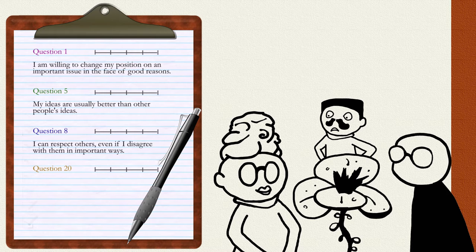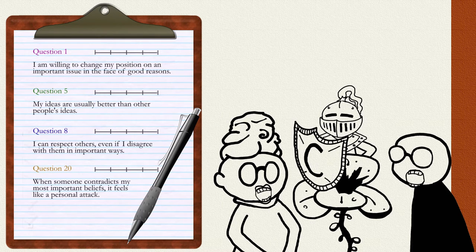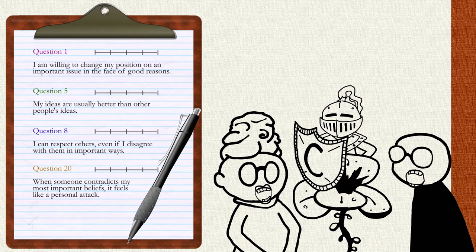And finally, the fourth factor, this item will also be reverse scored, is the independence of ego and intellect: When someone contradicts my most important beliefs, it feels like a personal attack.